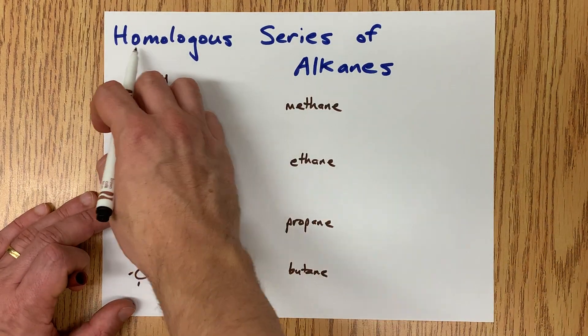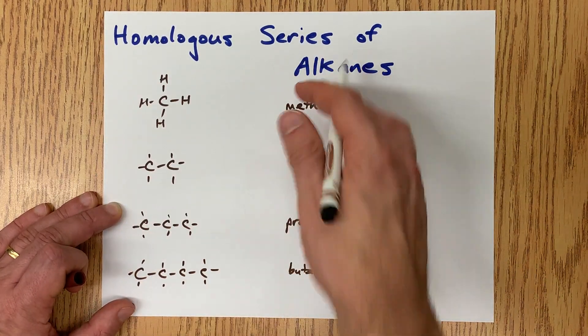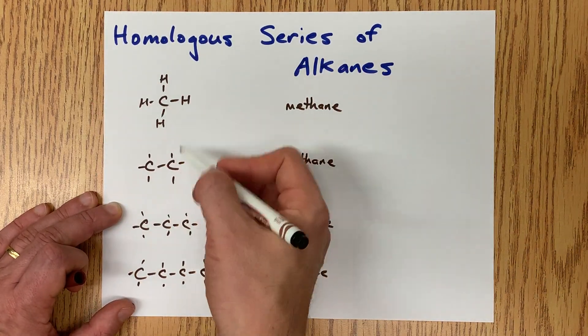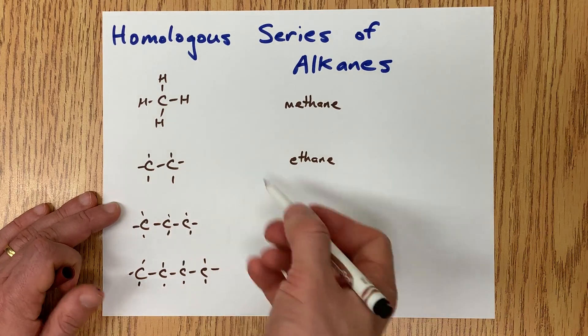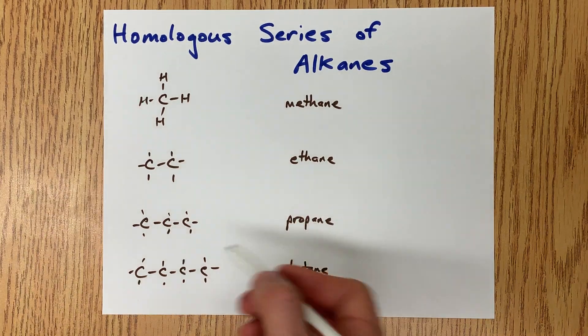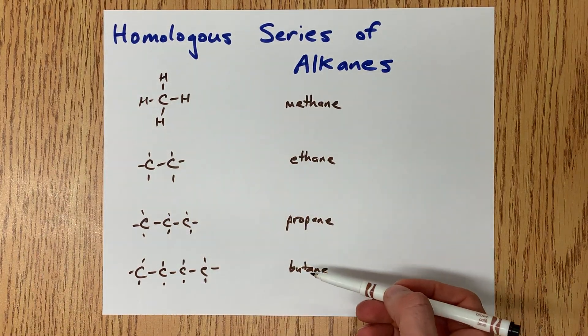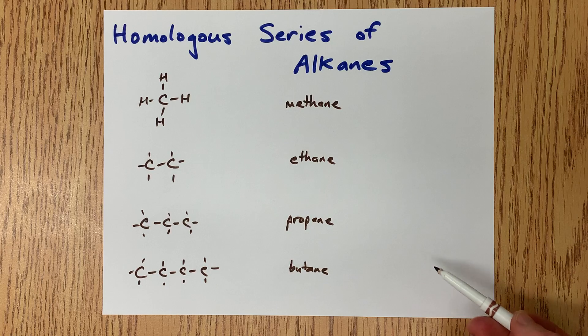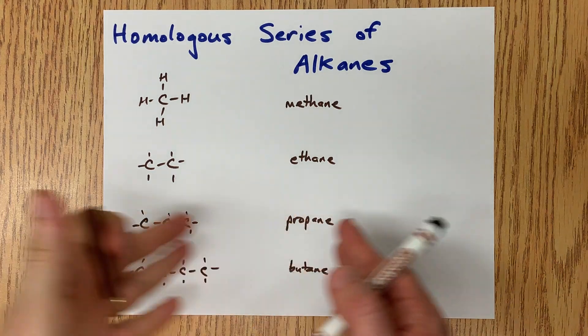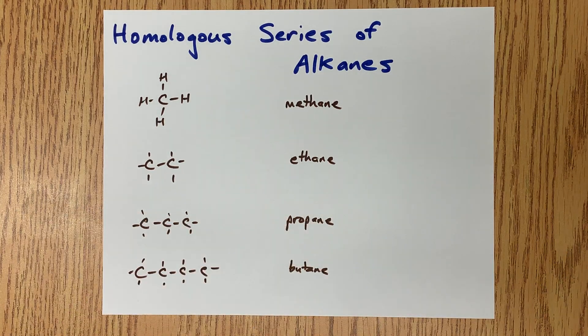The idea behind a homologous series is that you are sequentially adding one extra carbon to the chain. You can keep going to get pentane, hexane, heptane, octane, nonane, decane — until infinity.